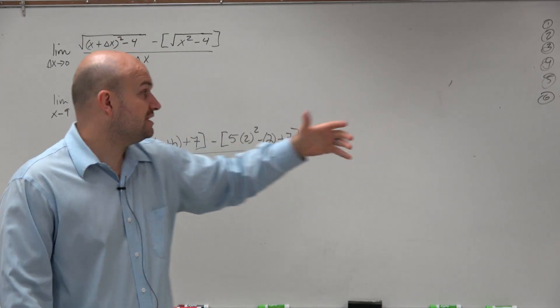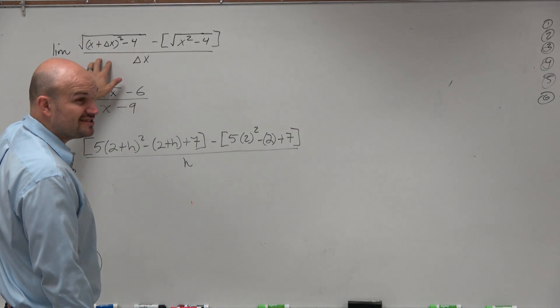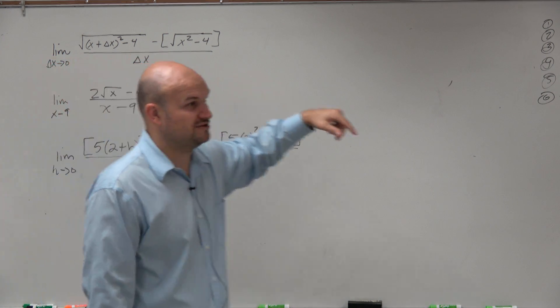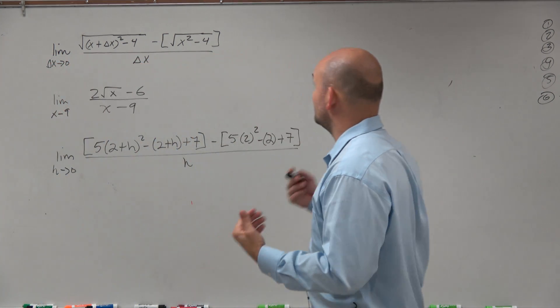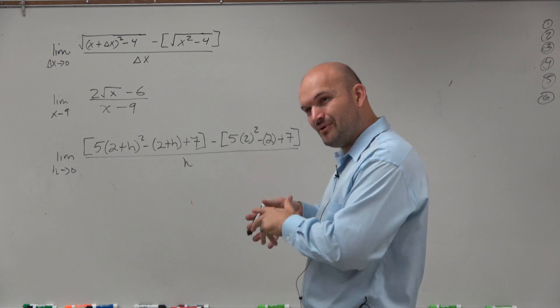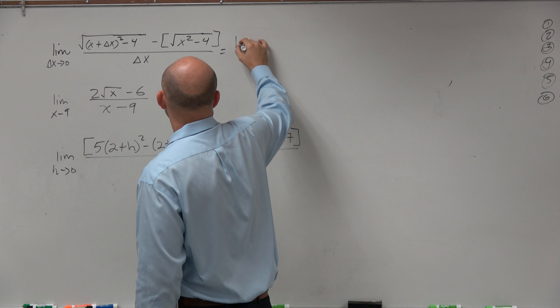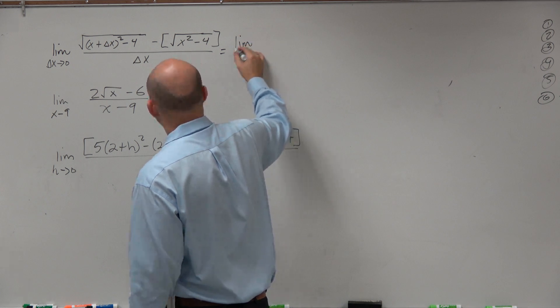So before we do the limit, which in this one just doesn't look like much fun, I don't really want to rationalize the radical with radicals looking like that. It just looks too crazy for me. However, I kind of notice this looks very similar to the limit definition of a derivative.